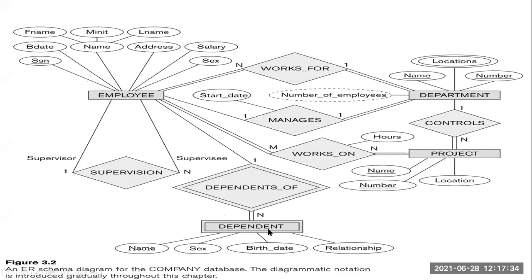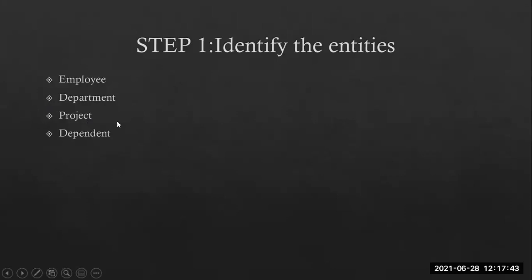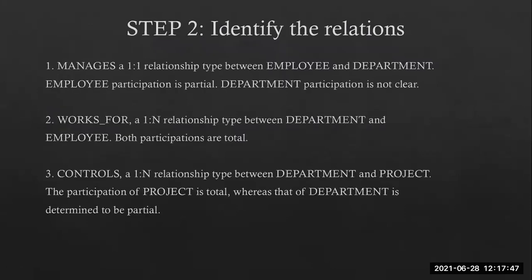A weak entity is one that doesn't have a primary key and is dependent on another entity. So the entities discussed are employee, department, project, and dependent. Now coming to the point, the kinds of relationships have also been discussed here.